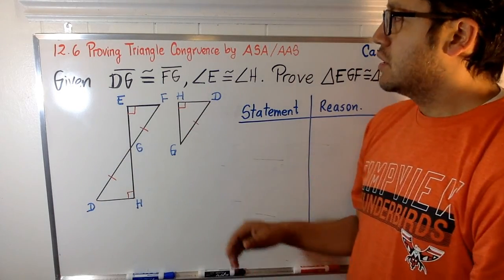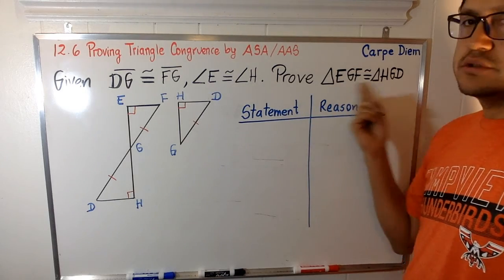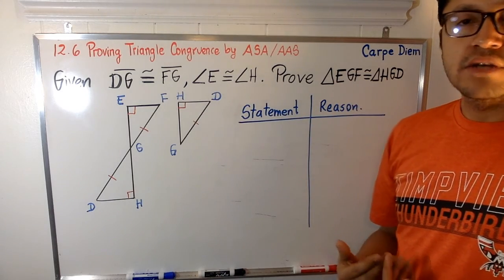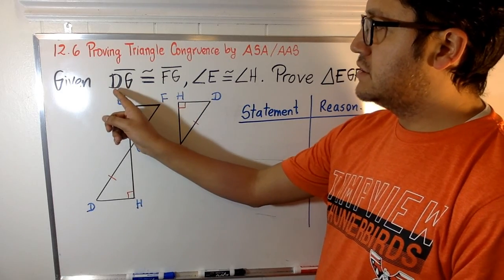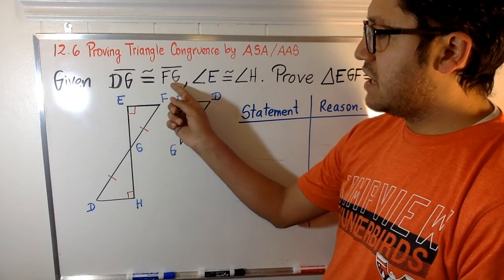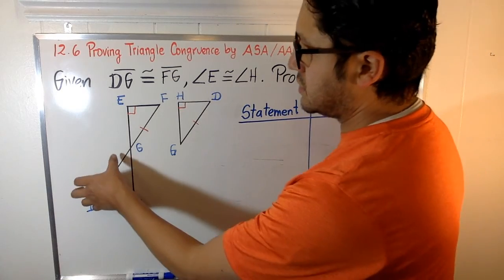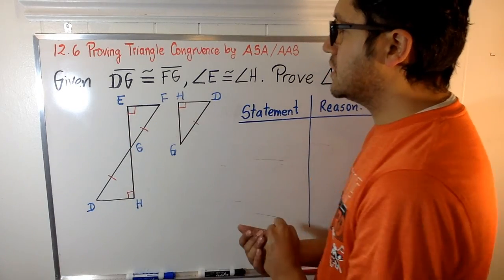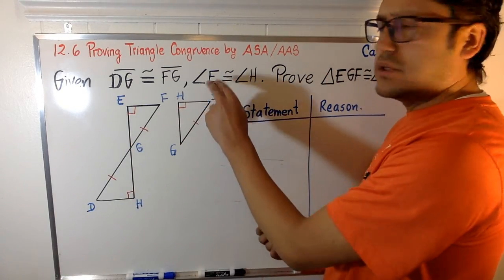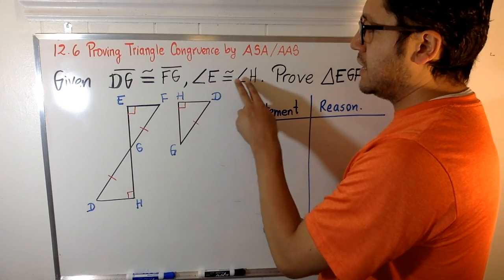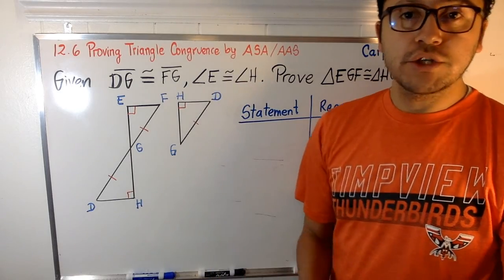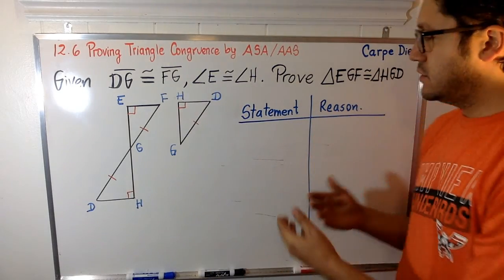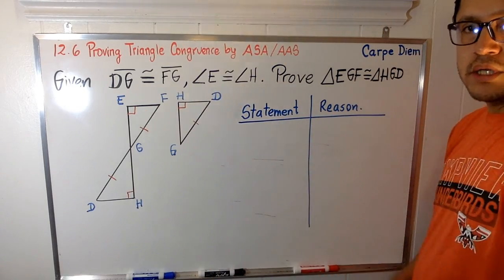And we have to prove that these two triangles are congruent. And the given information is this. They tell you that DG, segment DG and FG are congruent. It means DG and FG are congruent. And also, they are telling you that angle E and angle H are also congruent. And with that information in mind, let's use our column, two columns here, to prove that.